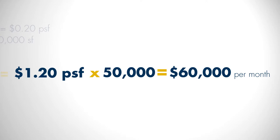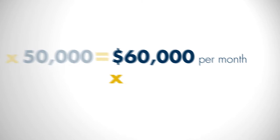If you want to figure out your annual rent, you would take $60,000 and multiply it by 12, which gives you $720,000 per year.